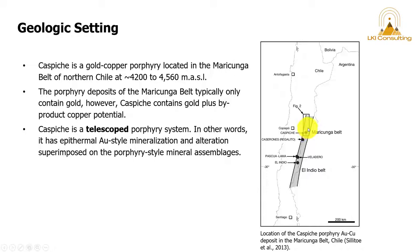The porphyry deposits of the Maricunga belt typically only contain gold. However, Caspiche contains gold plus byproduct copper potential.